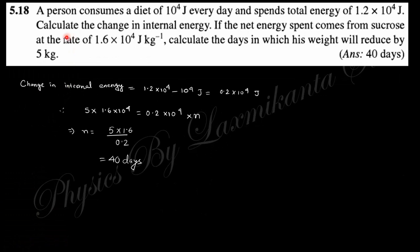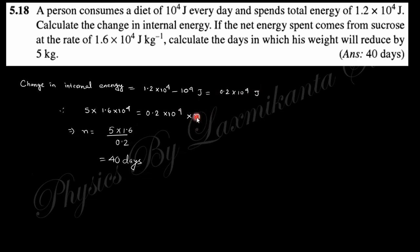Question 19: A person consumes 4 × 10⁴ Joules of energy every day and spends a total energy. Calculate the change in internal energy if net energy comes from body fat. Calculate the number of days in which the weight will be reduced by 5 kg. Using the energy per kg of fat and the daily energy deficit, the number of days N is calculated to be 40 days.